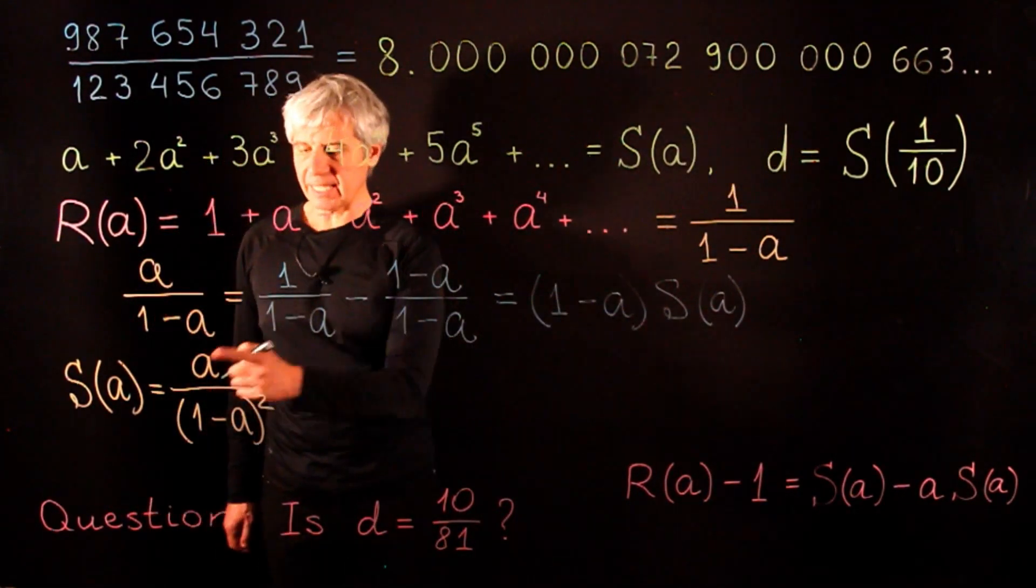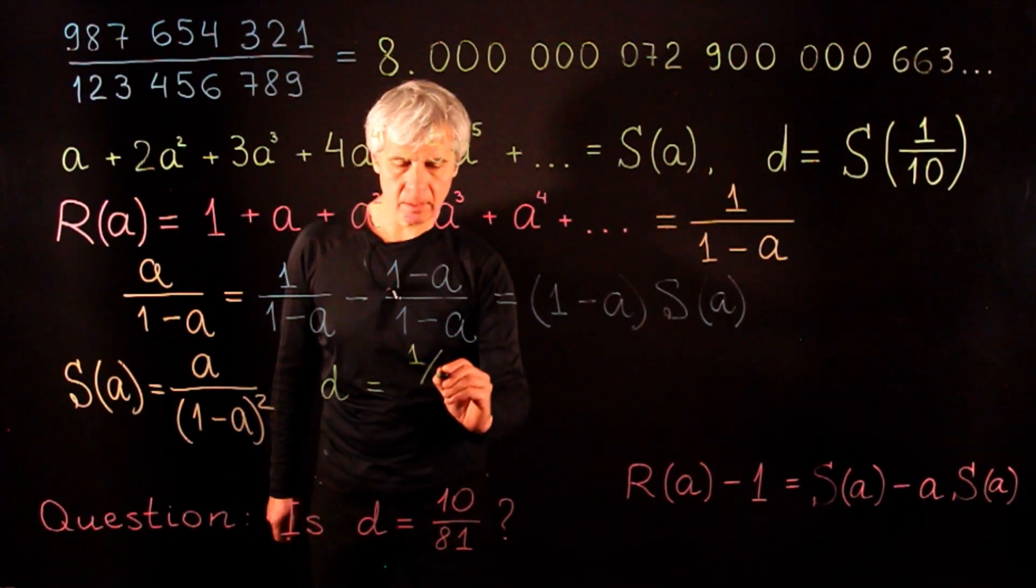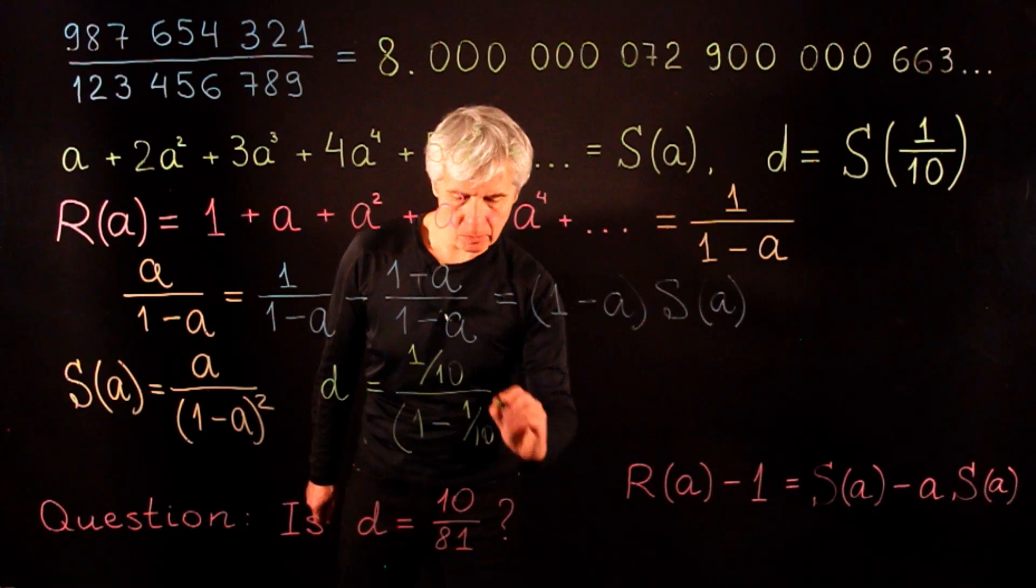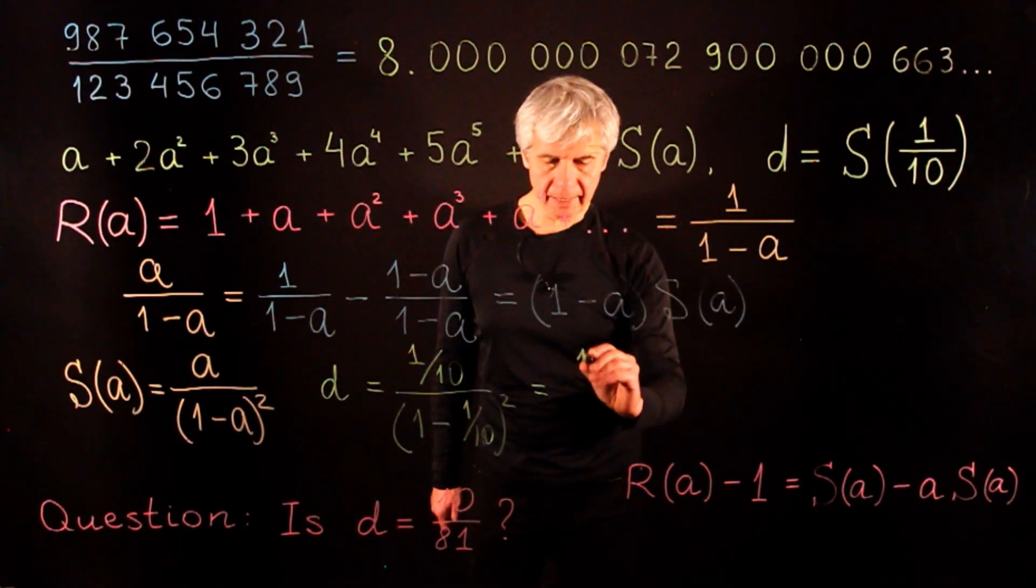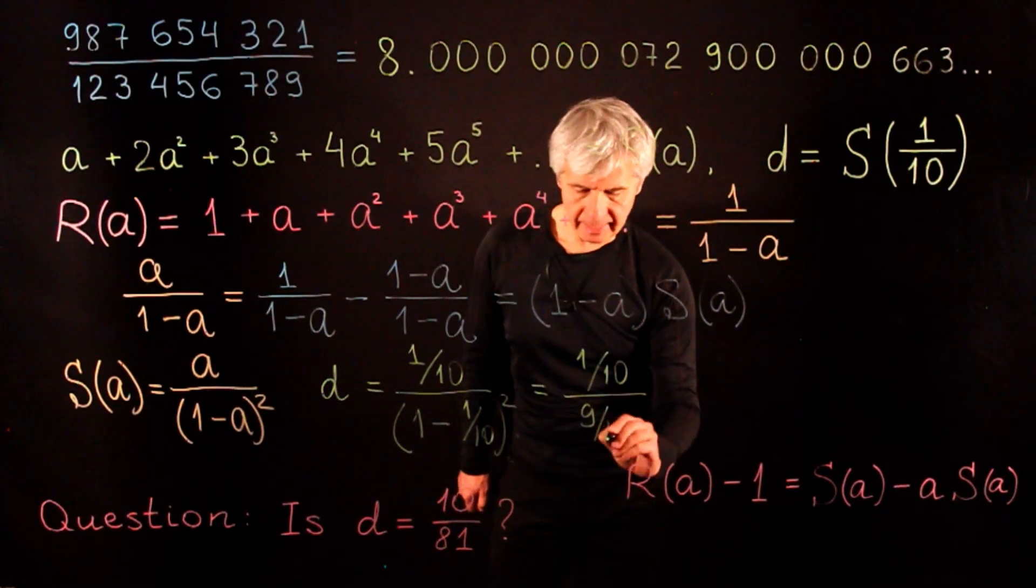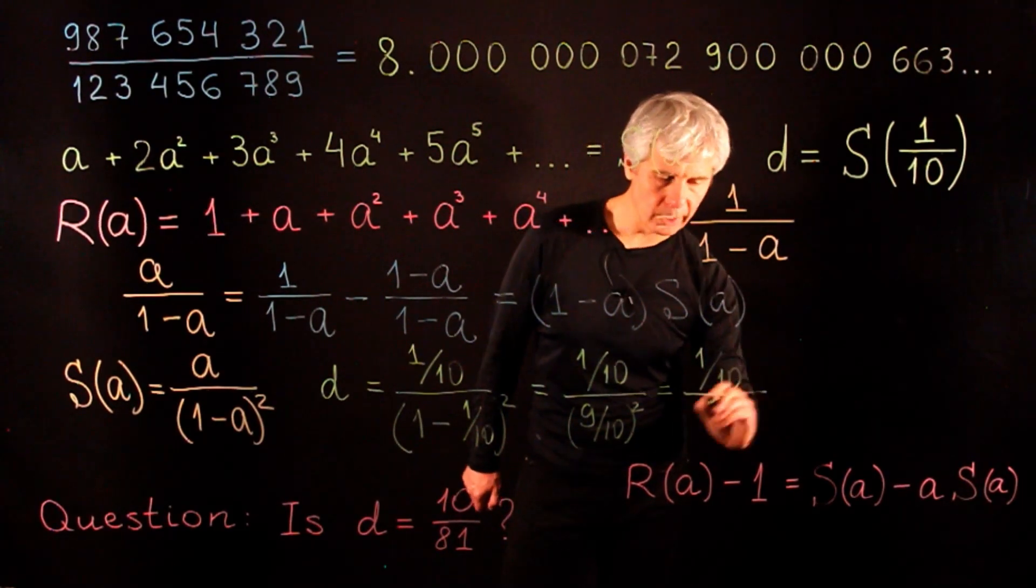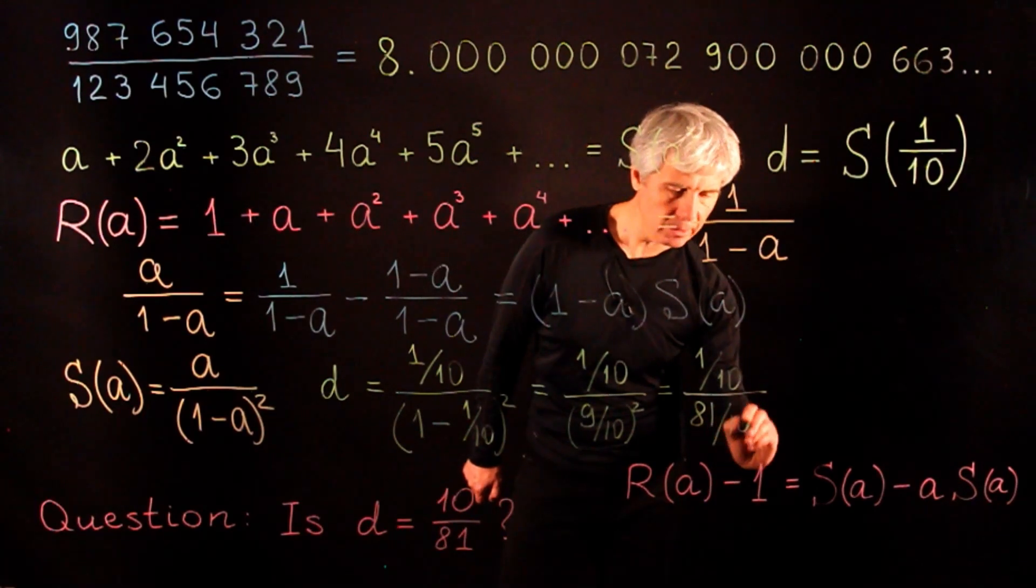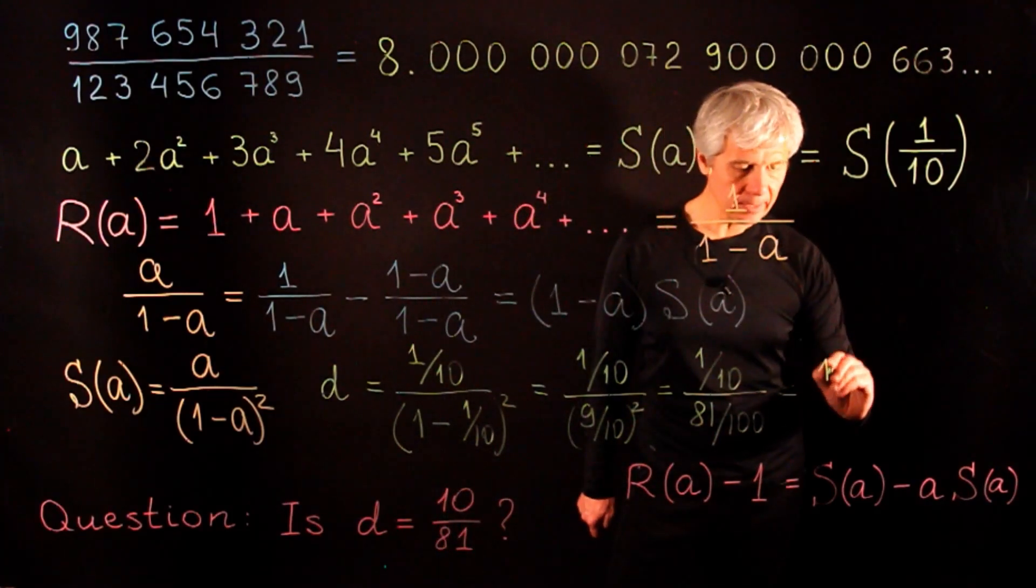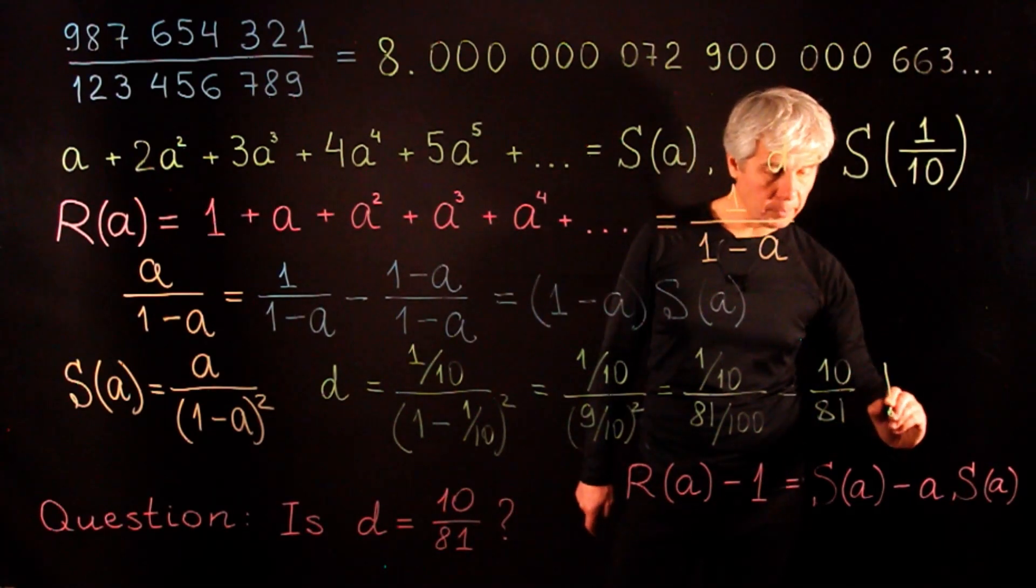We can get the value of d by taking a to be 1 tenth. So d is 1 tenth over 1 minus 1 tenth squared. So this is 1 tenth over 9 over 10 squared. So this is 1 tenth over 81 over 100. And now multiplying numerator and denominator by 100 we get 10 over 81. And that's exactly what we expected to get.